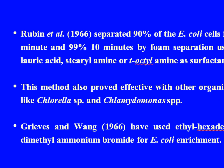Rubin et al. in 1966 separated 90% of the E. coli cells in 1 minute and 99% in 10 minutes by foam separation using loric acid, sterile amine, or T-octyl amine as surfactants. This method also proved effective with other organisms like Chlorella species and Chlamydomonas species.